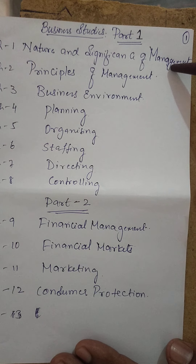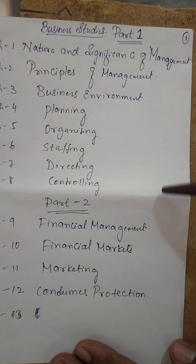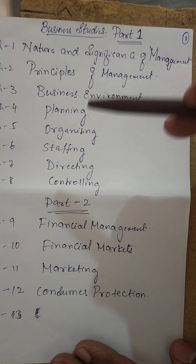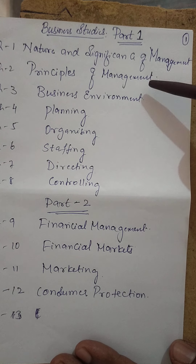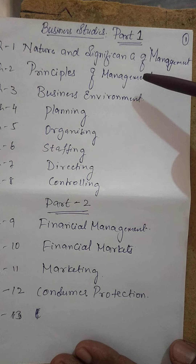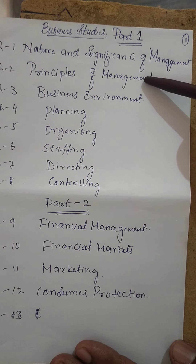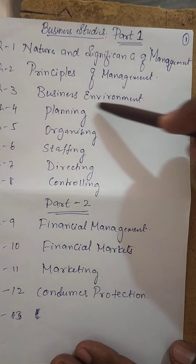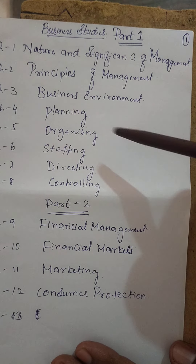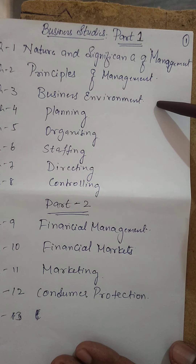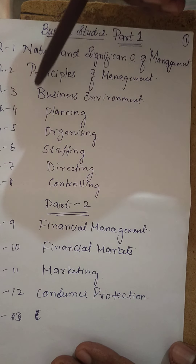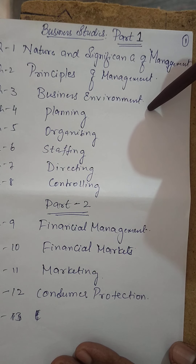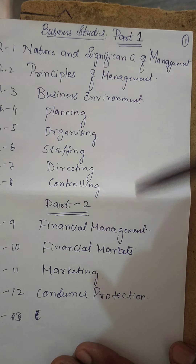Chapter two is about principles of management — what principles management has to follow. They cannot manage things arbitrarily; they have to go based on rules and regulations. Chapter three deals with business environment — what the environment in business is and how it is created.